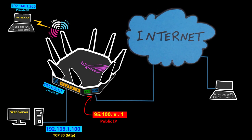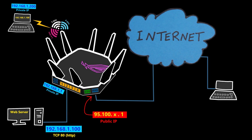However, the problem is that this IP address is not valid on the internet. If I'm outside the network, I can no longer use that private IP address to access the web server. What if I use the public IP address of the wireless router to connect?